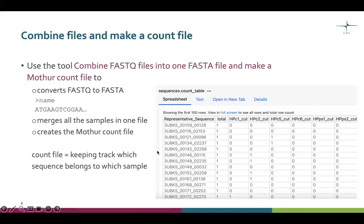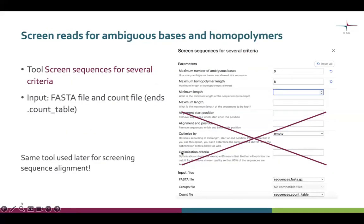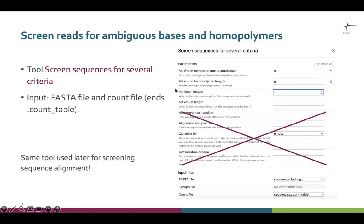Here is an example of a count file where the rows represent each individual sequence read and the columns represent all the samples. Next, we take the FASTA file and the count file from the previous step and use a tool called 'screen sequences' to filter for several criteria and get rid of ambiguous bases and homopolymers. It is important here that we give both the FASTA file and the count file, so that we have both the sequence information and the information about which sequence occurs in which sample. The parameters we need now are at the top of the window — for ambiguous bases, homopolymers, and possibly minimum length.